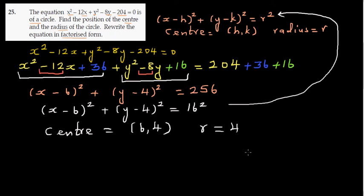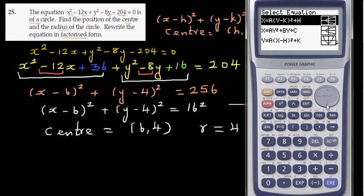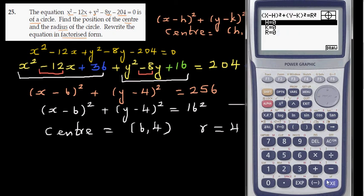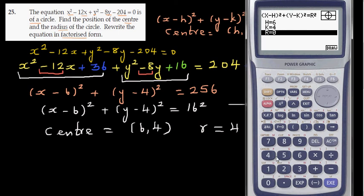Let's confirm this on a graphic calculator. Go to conics and then scroll down to circle. This is the circle form. Now enter h equals 6, k equals 4, and the radius is also 4... wait, the radius here is 16.